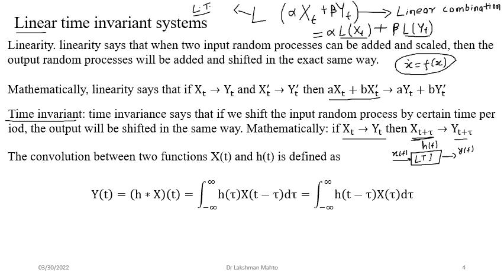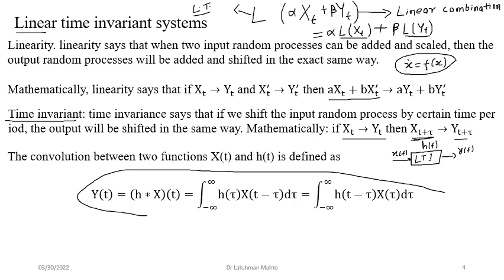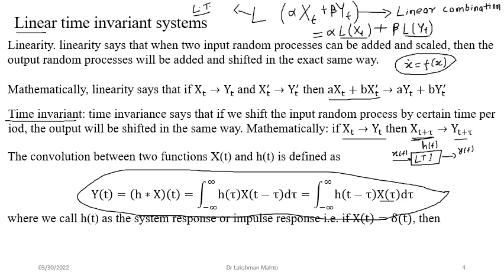H(t) can be called a system response, but it is specifically the response with respect to a delta function input. Another name for H(t) is impulse response. We can always determine H(t) from a given system or given relation, and from that we can easily find the output Y(t) for any general input.